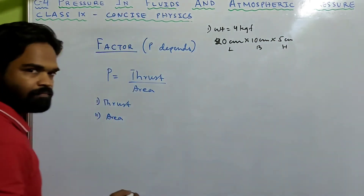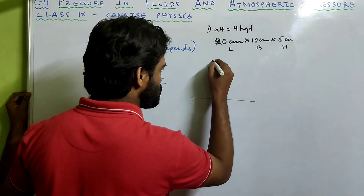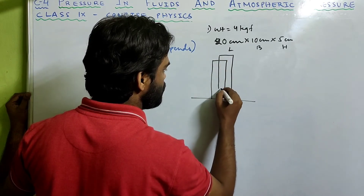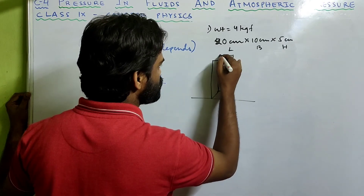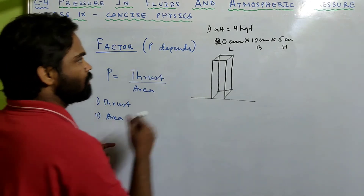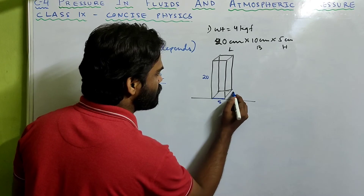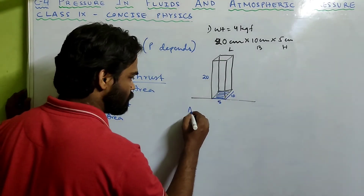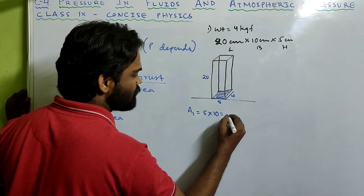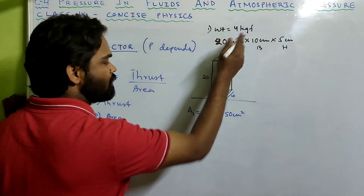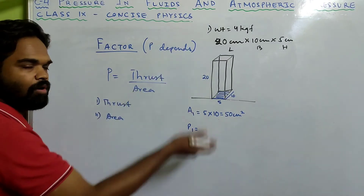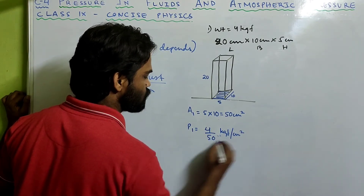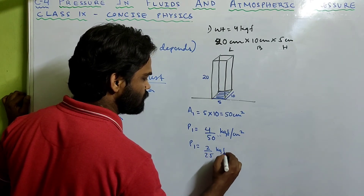In the first case, place the brick so that the longest side (20 cm) is vertical. The area in contact with the surface is 5 × 10 cm, which is 50 cm square. The weight acts as the thrust. So the pressure P1 equals 4 divided by 50 kgf per cm square, which gives P1 = 2/25 kgf per cm square.